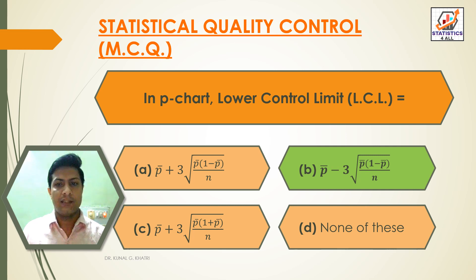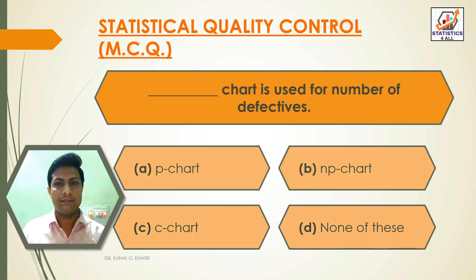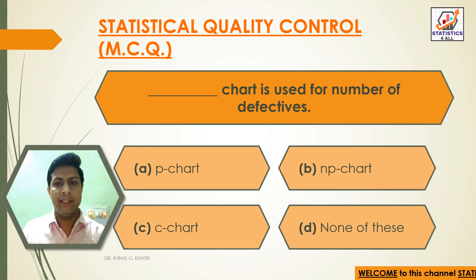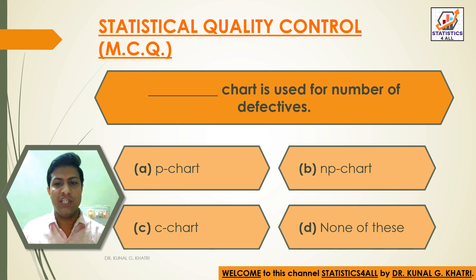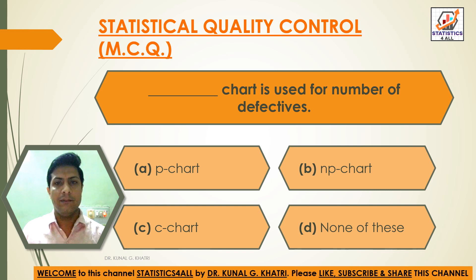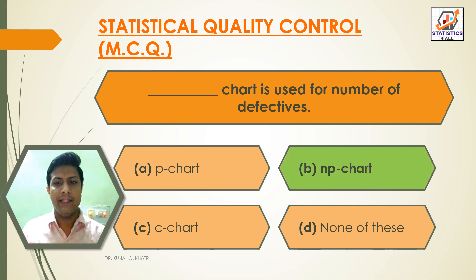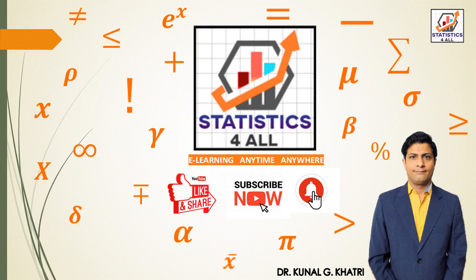Question 19: Which chart is used for the number of defectives? Option A: P chart, Option B: NP chart, Option C: C chart, Option D: None of these. Answer: Option B — NP chart is used for number of defectives.